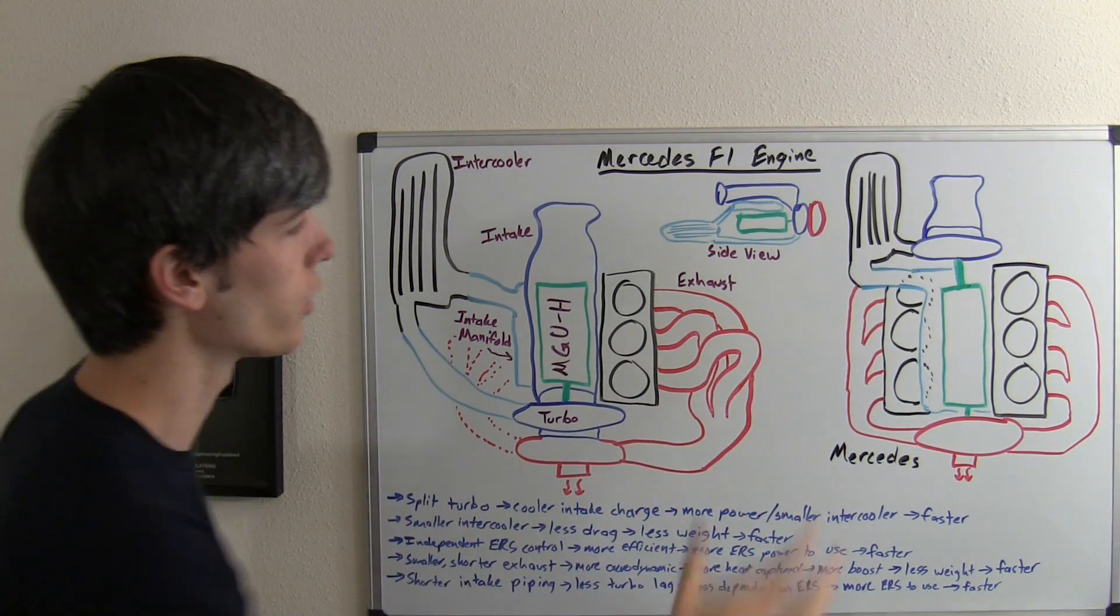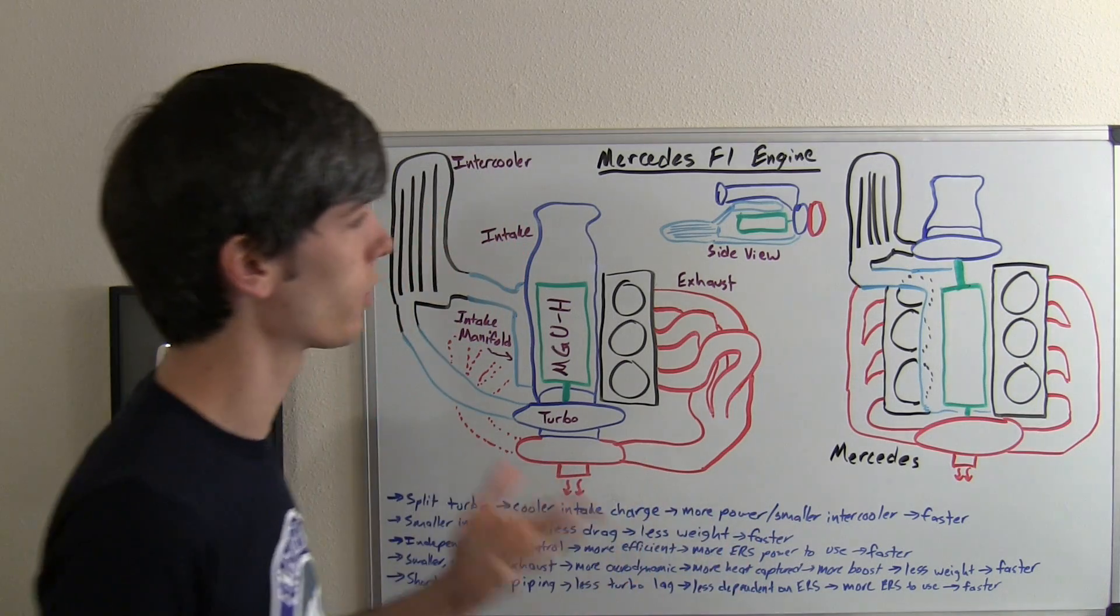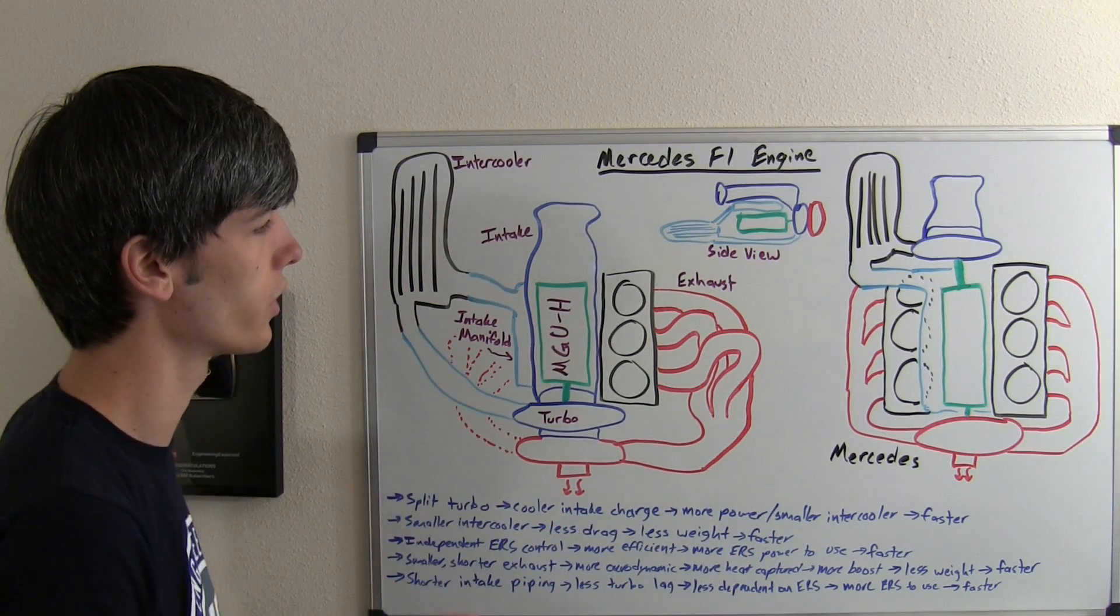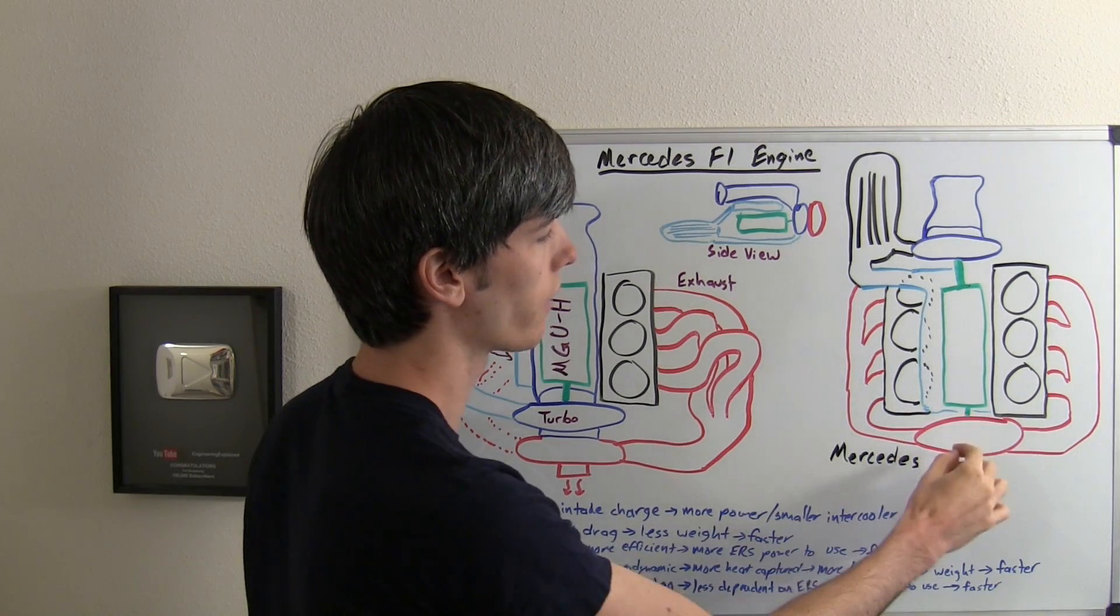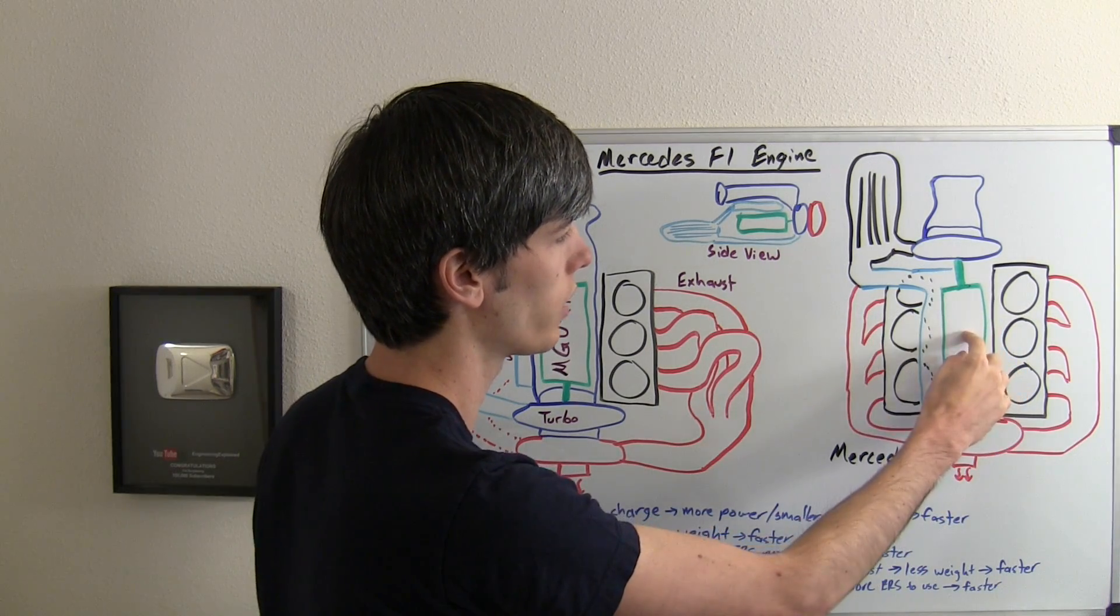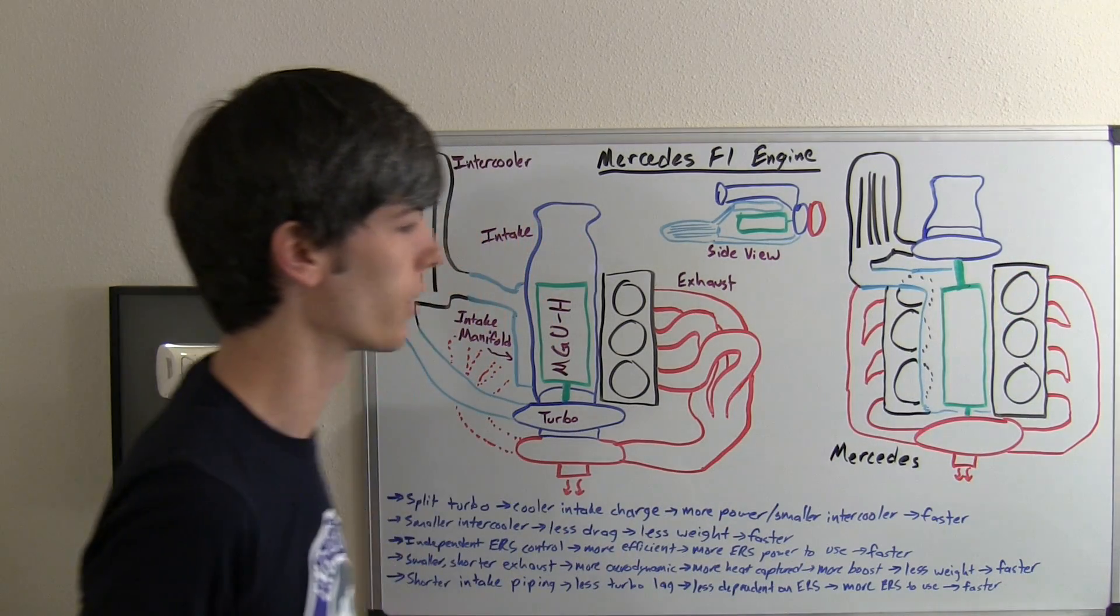The Mercedes engine, you can see, is a little bit more compact. One of the things that they've done, one of the fundamental differences of their engine, is that they've split the turbocharger. So the exhaust portion is at the rear, they've got a shaft which connects with the MGUH and then connects with the intake side of the turbocharger at the front of the engine.